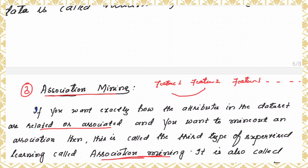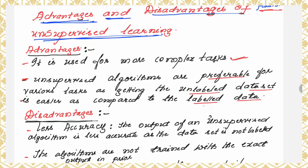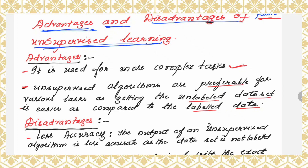In this session, you have seen the different types of unsupervised machine learning algorithms: clustering is one, the second is dimension reduction, and the third is association mining. Now let us see the advantages and disadvantages of unsupervised learning. An advantage is that it is used for more complex tasks — unsupervised algorithms are preferable for various tasks as getting an unlabeled dataset is easier and less expensive compared to a labeled dataset.